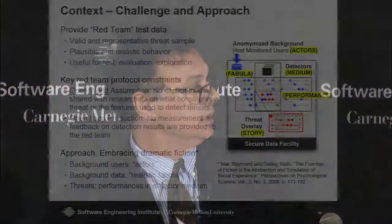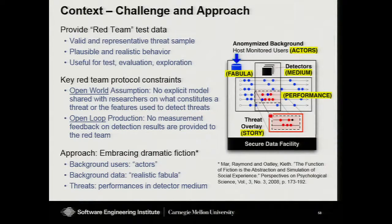Our approach to solve the problem — and this is going to sound fanciful at first — is to adopt a notion of fictional narrative and dramatic performance. There is quite a bit of theoretical foundation to support the use of fiction and narrative in producing test data. In the cognitive science world, it's well understood that narrative is the way humans orient themselves and construct their social realities. There's one paper in particular by Marr and Oatley titled 'A Function of Fiction is the Abstraction and Simulation of Social Experience,' which discusses abstraction, simulation, compression, packaging, and sharing — all things we're really doing in the threat data. They describe social simulation or fiction as a flight simulator of social complexity.